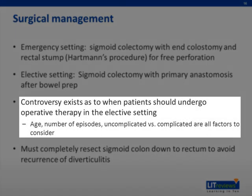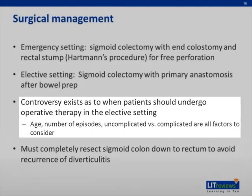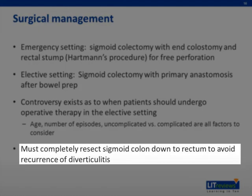There is some controversy in the surgical literature about when patients should undergo elective sigmoid colon resection for diverticular disease. Factors to consider include patient age, number of previous episodes of acute diverticulitis, and whether prior episodes were uncomplicated or complicated. Another well-established surgical principle is that the entirety of the sigmoid colon must be removed down to the level of the proximal rectum to avoid recurrence of diverticulitis in the future.